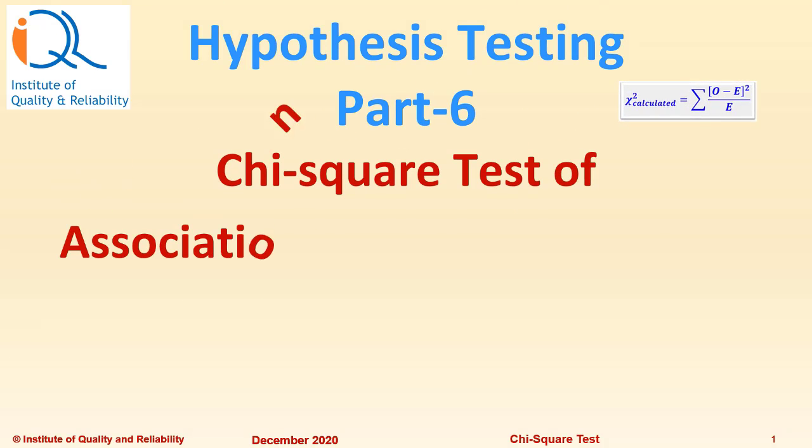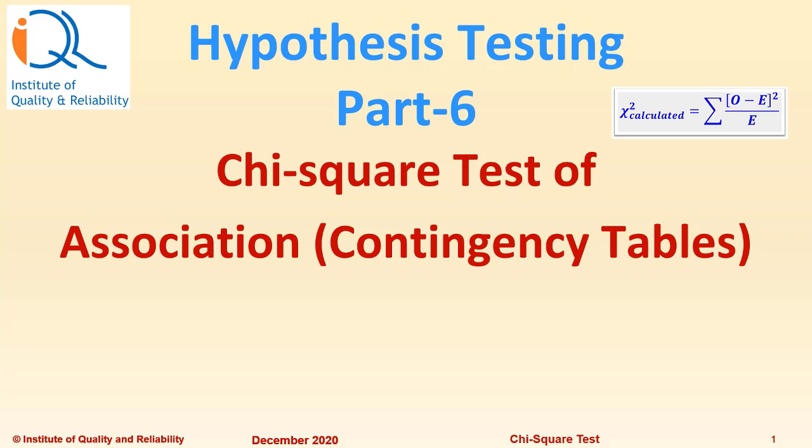Hypothesis Testing Part 6 Chi-square Test of Association Contingency Tables.